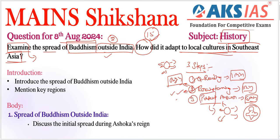Let us start the introduction part. To write a decent introduction, especially for history questions, we need to start by providing brief information about the topic including a time factor, related facts, kingdoms, king names, etc. Coming to Buddhism, the spread of Buddhism outside India began during the reign of Emperor Ashoka in the 3rd century BC — all this information can be included in the introduction.